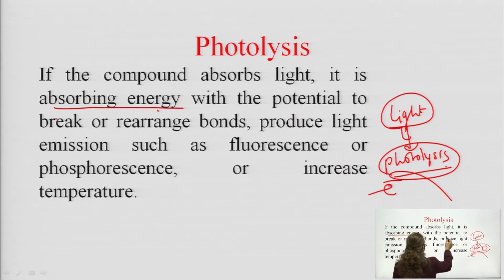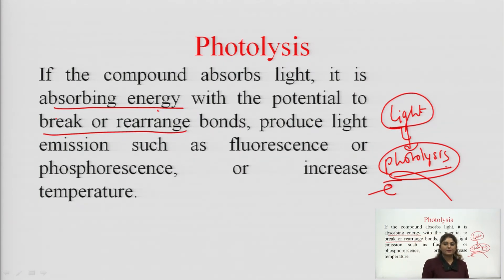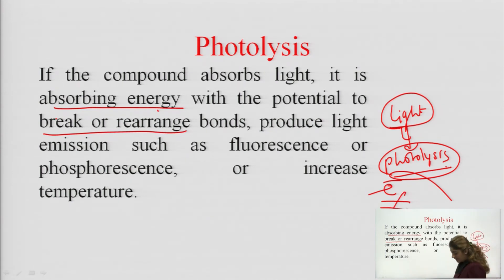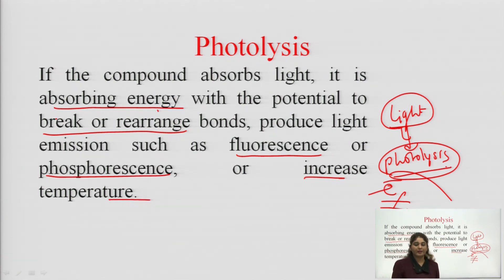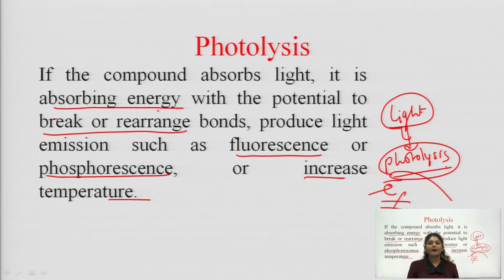The energy that is absorbed in the form of electrons can break or rearrange bonds. This produces emission such as fluorescence or phosphorescence, or increases the temperature. This is the result of photolysis. In photolysis, the drug gains energy in the presence of light and rearranges or breaks bonds, resulting in fluorescence and phosphorescence processes or an increase in temperature.